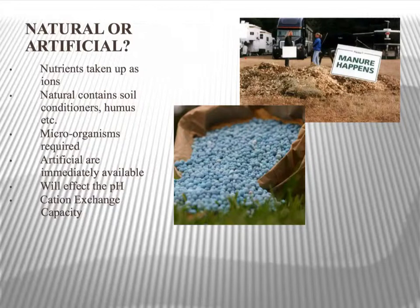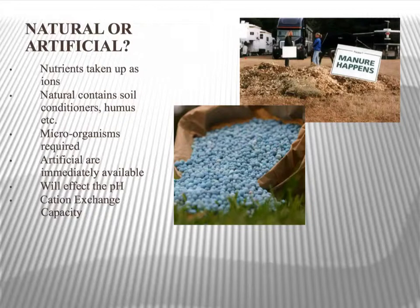If your plants are showing a nutrient deficiency, the best way to counteract that is to use an artificial fertiliser because it will perk the plants up immediately. If you're wanting to improve your soil over the long term you would use natural fertilisers, because it contains a whole list of other things that will benefit your soil.